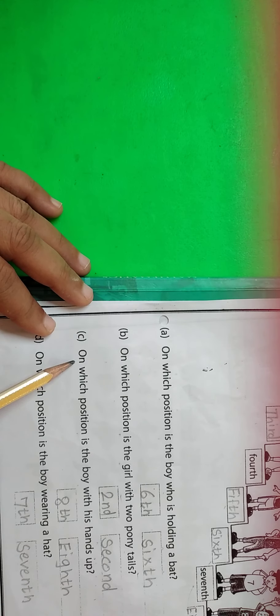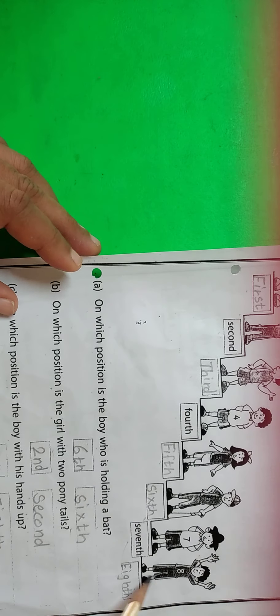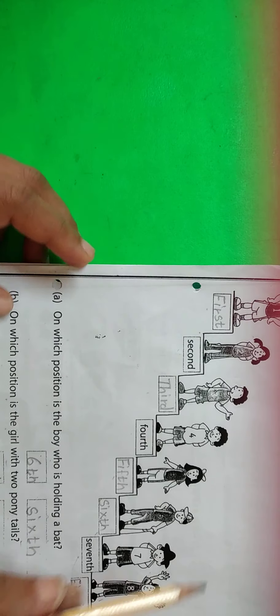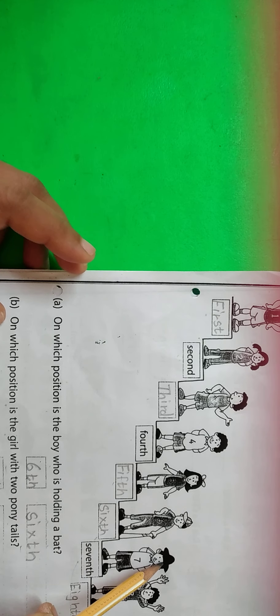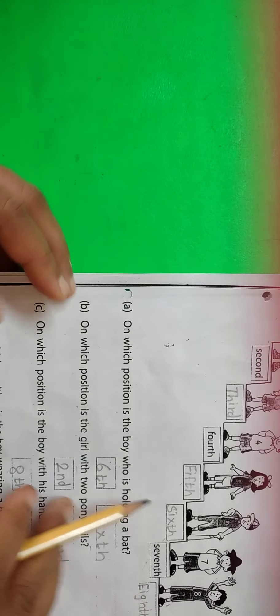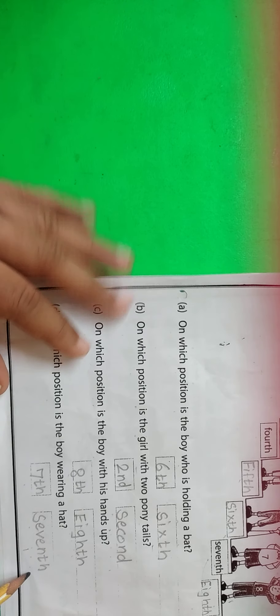Now the 3rd question: on which position is the boy with his hands up? 8th position. Write here 8th and the spelling: E-I-G-H-T-H. Last: on which position is the boy wearing a hat? This is the cap and this is the hat — they ask here hat. The boy is at the 7th position. Write here 7th and the spelling: S-E-V-E-N-T-H.